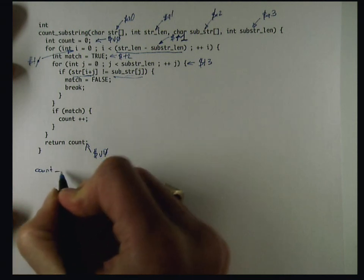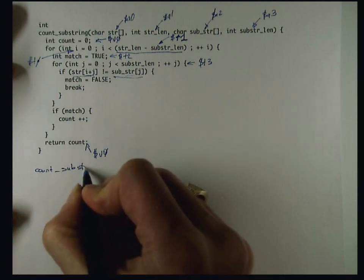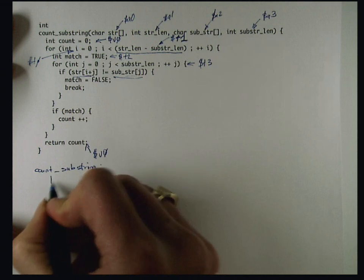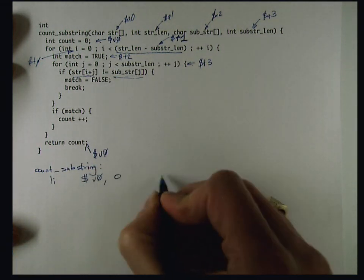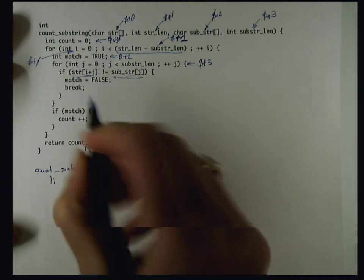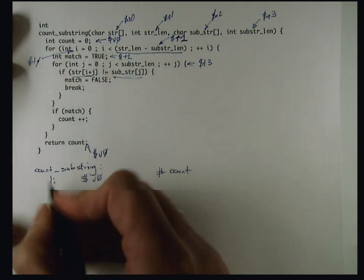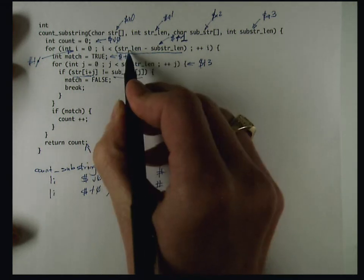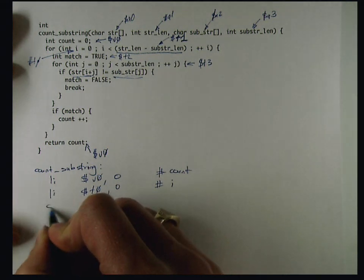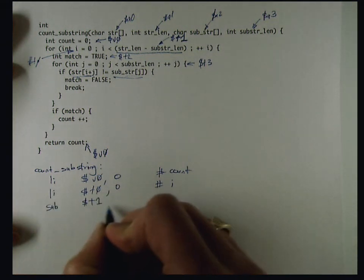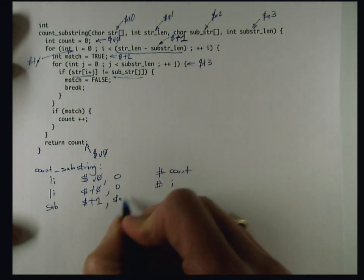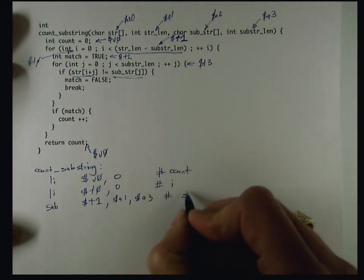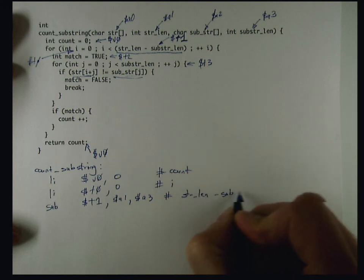I'm going to initialize count with a load immediate into V0 of 0. I'm going to go ahead and initialize I to 0, and I'm going to compute this strlen minus substrlen, and I do that with a subtract instruction, and I said I was going to put that in T1, and strlen is coming through A1, and substrlen is coming through A3.